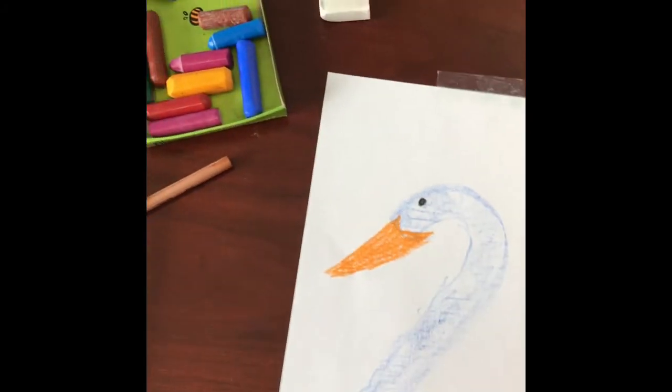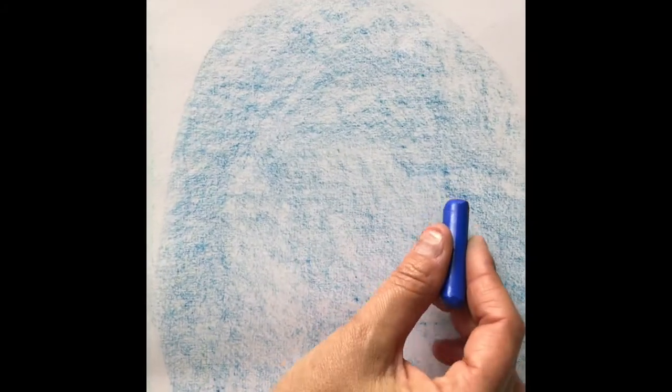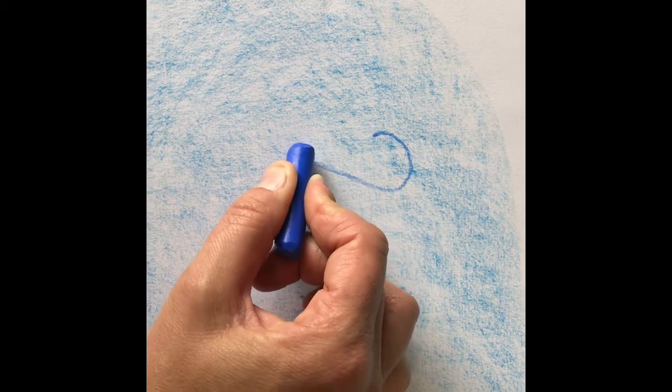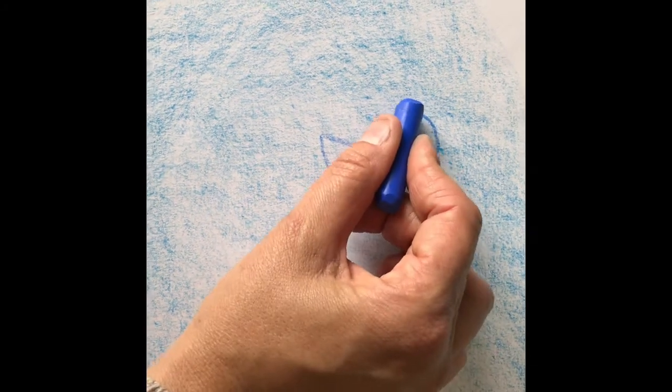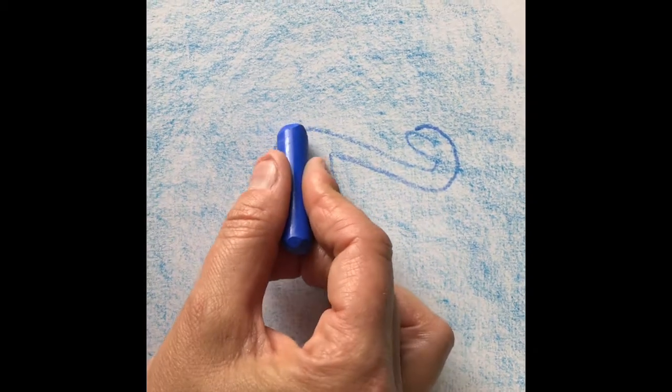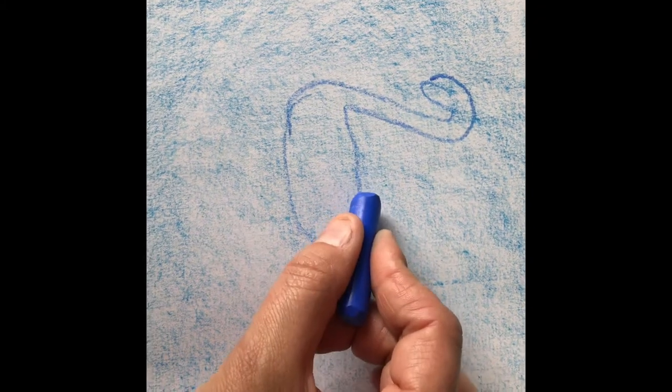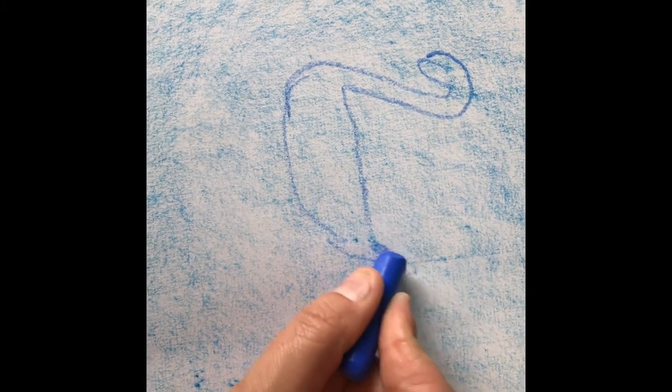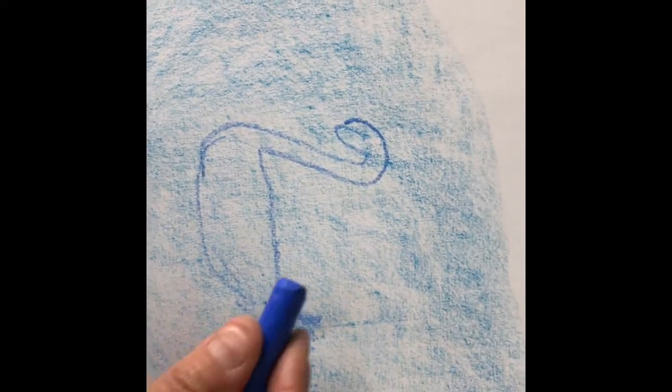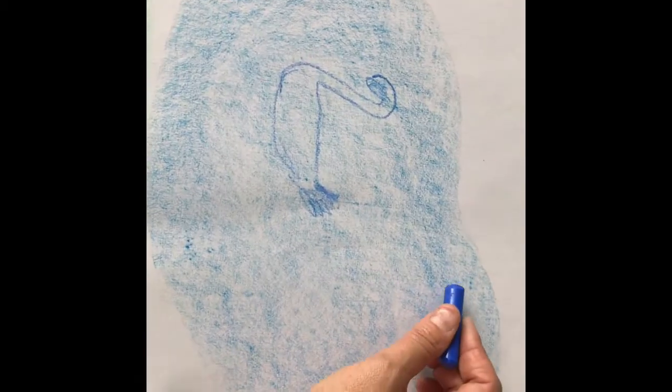Now that beak is a little bit big. If I could go back, I would actually make it about that bit smaller. Okay, so on my paper I'm going to start making my swans. I'm going to use my stick crayon and I'm going to draw my first swan, and then I'll fill her in.